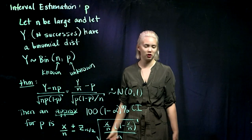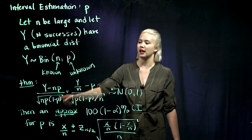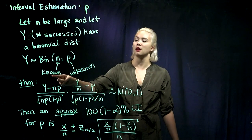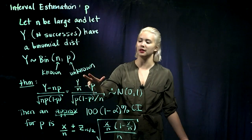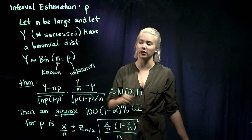So y is a binomial random variable. It has parameters n and p. n is known, and then p is unknown, and this is what we're trying to figure out.